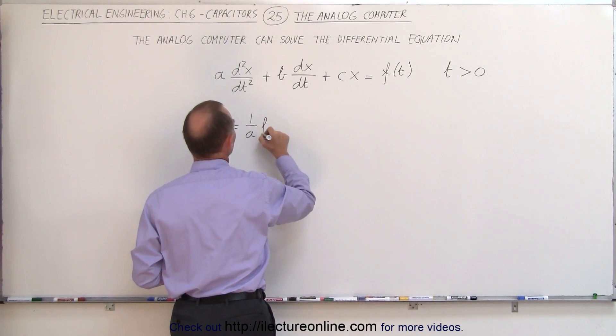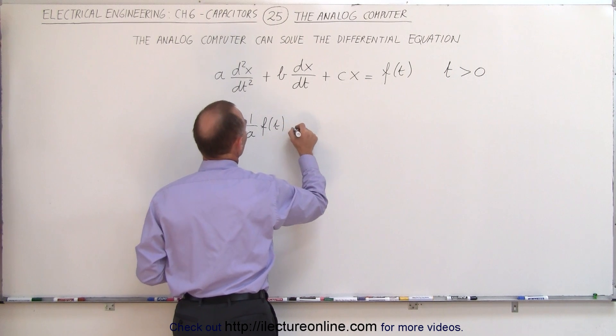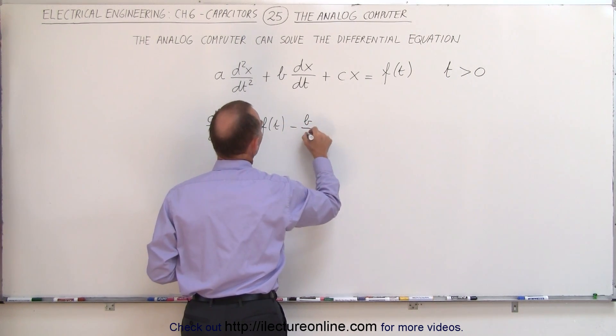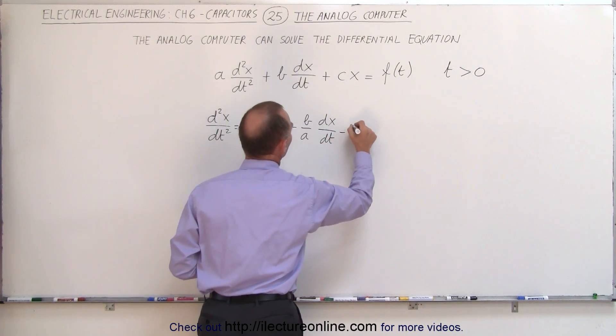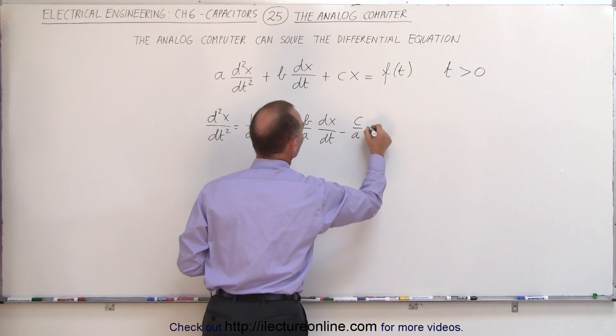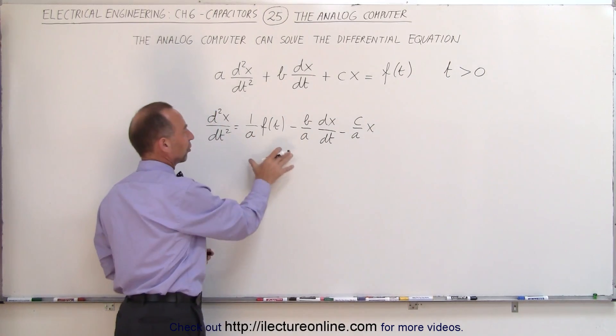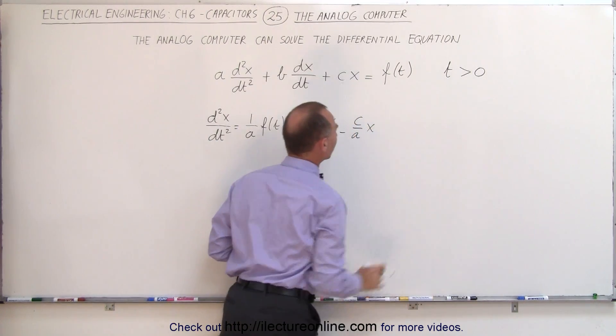I will get 1 over a times the function of time minus b over a times dx/dt minus c over a times x. And of course this is only good for time greater than zero.